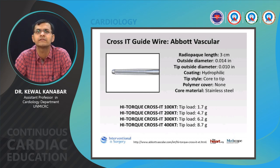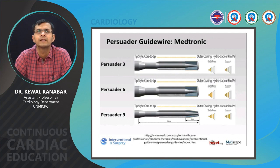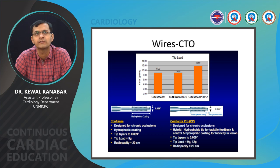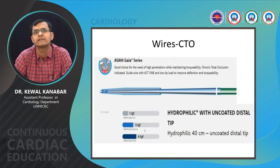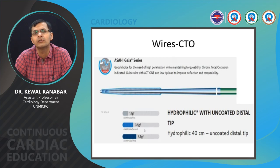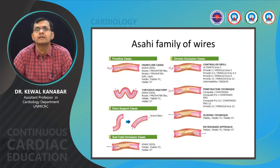The Crossit wire has a short radiopaque length, is a 0.014 wire, hydrophilic, with stainless steel core and no polymer coating. Comes as Crossit 100, 200, 300, and 400 with increasing tip loads from 1.7 gram to 8.7 gram. The Confianza and Confianza Pro are among the highest tip load wires, mostly for chronic total occlusions, with hydrophobic coating. Confianza has a tip load of 9 gram, Confianza Pro is 12 grams, radiopaque portion 20 centimeters. The Gaia series is very useful for hard calcified lesions — hydrophilic wires with uncoated distal tip, tip load ranging 1.7 to 4.5 grams, maintaining torque ability.